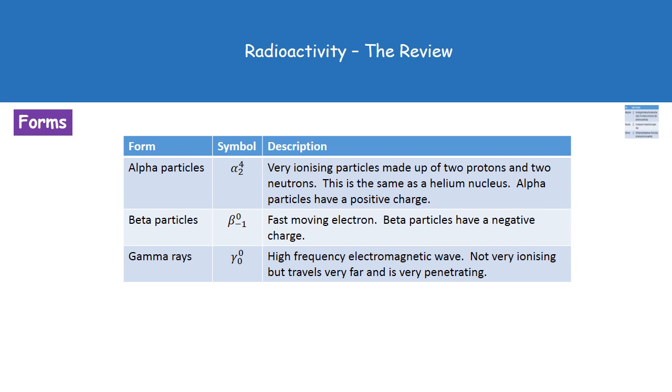So the 4 represents our mass number, the 2 is the atomic number. Our alpha particle is very ionizing, the most ionizing of all three of these forms of radiation. It's made up of two protons and two neutrons. So this actually makes it the same as a helium nucleus. And because we've got two protons and two neutrons, our alpha particle has a positive charge.